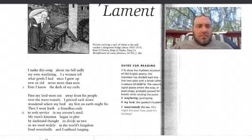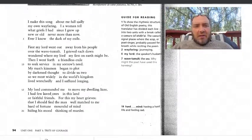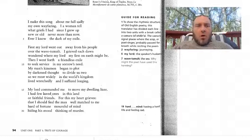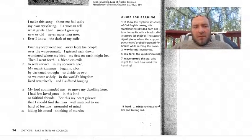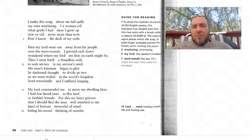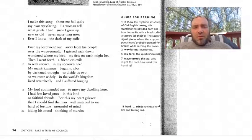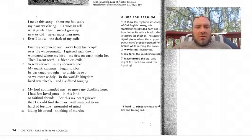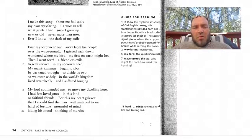The Wife's Lament: I make this song about me full sadly, my own wayfaring. I, a woman, tell what griefs I had since I grew up, old, new or old, never more than now. Ever I know the dark of my exile. First, my Lord went out, away from his people. Over the wave tumult, I grieved each dawn, wondered where my Lord, my first on earth, might be. Then I went forth, a friendless exile, to seek service in my sorrow's need. My man's kinsmen began to plot, by darkened thought, to divide us two. So we most widely in the world's kingdom lived wretchedly. And I suffered longing.